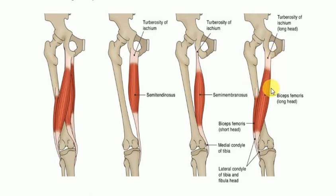The long head of the biceps femoris originates from the ischial tuberosity, while the short head originates from the linea aspera and the lateral supracondylar ridge.